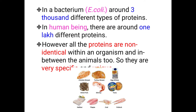In an organism like the bacterium E. coli, we find around 3,000 different types of proteins. In human beings, we find one lakh different types of proteins. However, proteins of these two organisms are never identical — proteins by structure and function are very specific and unique in their nature.